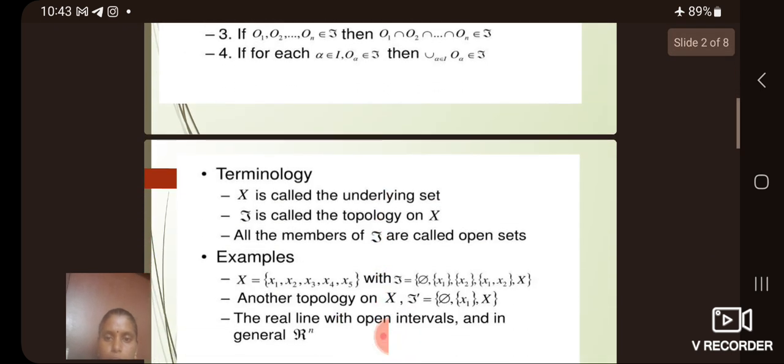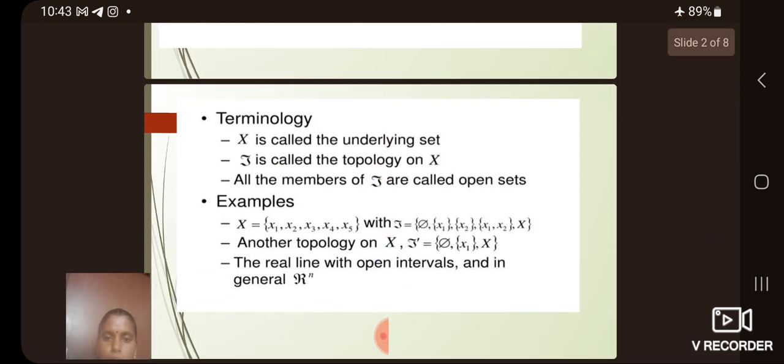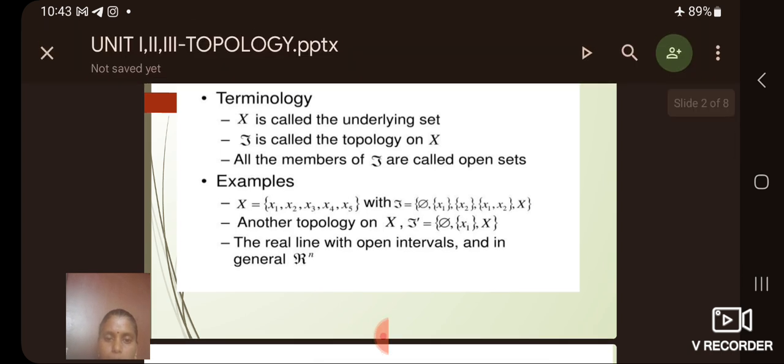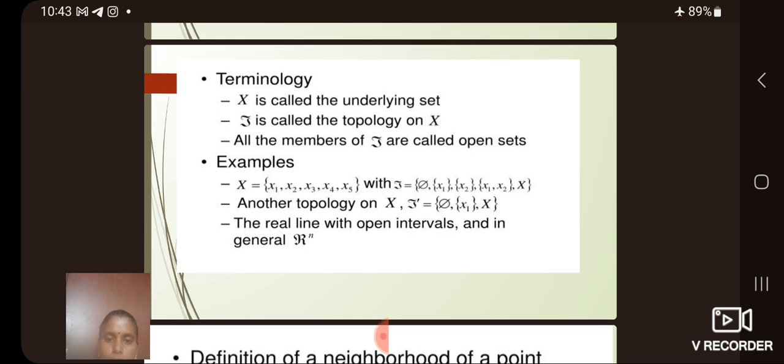Next, we see the terminology used in topological spaces. X is the underlying set and tau is called the topology on x. All the members of tau are called the open sets.